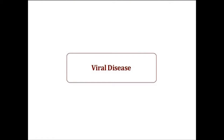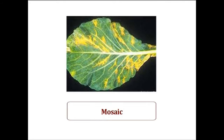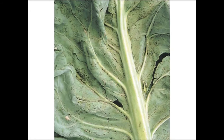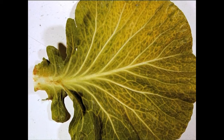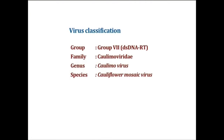The next is the viral disease: mosaic. Infected plants produce vein clearing or vein-banding symptoms, ultimately leading to a mosaic pattern. Classification: the virus is grouped under Class VII double-stranded DNA reverse transcriptase, Family Caulimoviridae, Genus Caulimovirus, Species Cauliflower Mosaic Virus.